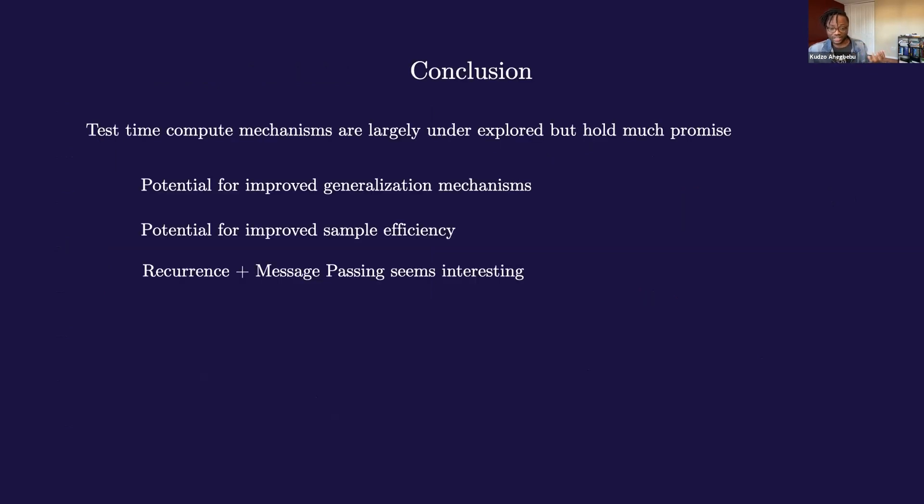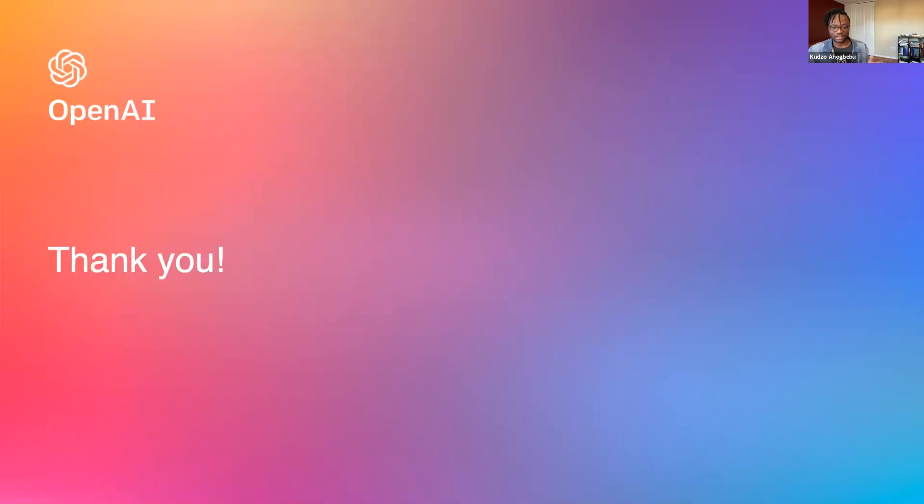Okay. Conclusion. Yeah. So test-time compute mechanisms, I think, are largely underexplored but hold much promise. They have the potential for improved generalization mechanisms, potential for improved sample efficiency. I think recurrence plus message passing seems to be a really interesting combination. And if the methods of this presentation seem contrived, that's because they are. But ultimately, like I'm, while the specific methods are kind of crude, I'm bullish on the idea of test-time compute in general. And I think that the next few years, we'll see critical breakthroughs that make use of ideas that have test-time compute at their core. That's it. I'd like to thank my mentor, Will Guest. And I'd also like to thank the program organizers and my cohort, and all the people that gave me early feedback on some of this stuff. And thank you. And now I'll take questions.